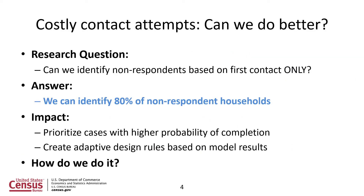Given these costly contact attempts, the research question is: can we do better, and can we identify non-respondents based on the first contact only? Our research says that we can identify 80% of non-respondent households based on only the first contact.